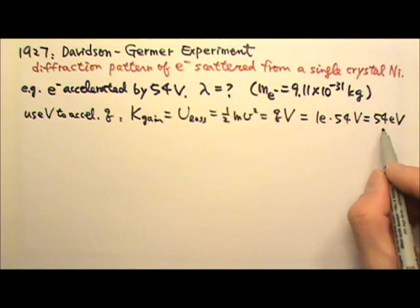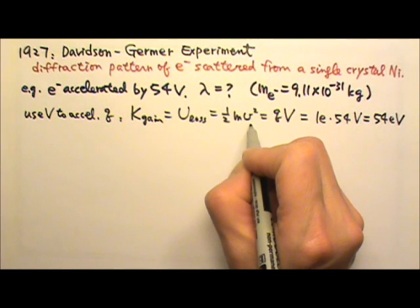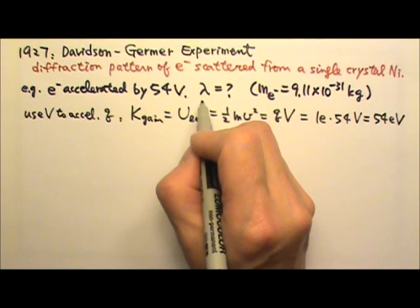Although we don't need that now, right now what we need is the speed so that we can use the speed to find the momentum and then we can use the momentum to find the wavelength.